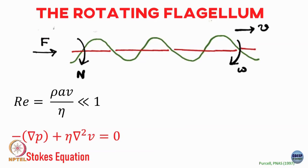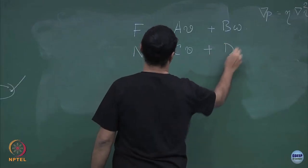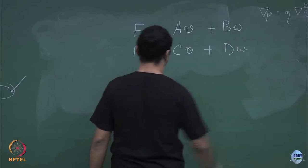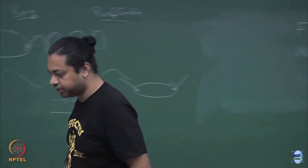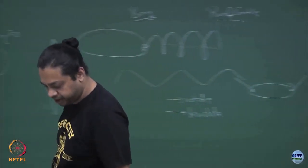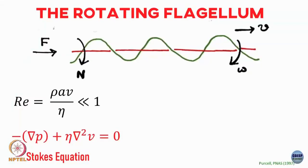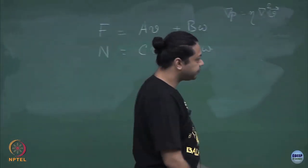Similarly, if you put in a torque N, that is going to go as c·v plus d·ω. In this low Reynolds number regime, the forces and the torques will be linearly related to the velocity and angular velocity, and I can construct this sort of equation between them.